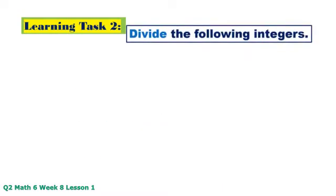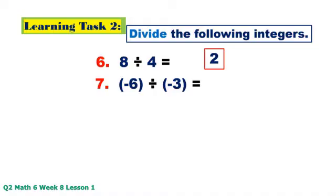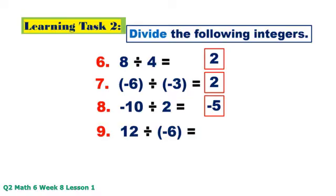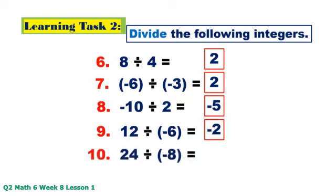Divide the following integers. Number 6: positive 8 divided by positive 4 equals positive 2. Number 7: negative 6 divided by negative 3 equals positive 2. Number 8: negative 10 divided by positive 2 equals negative 5. Number 9: positive 12 divided by negative 6 equals negative 2. Number 10: positive 24 divided by negative 6 equals negative 3.